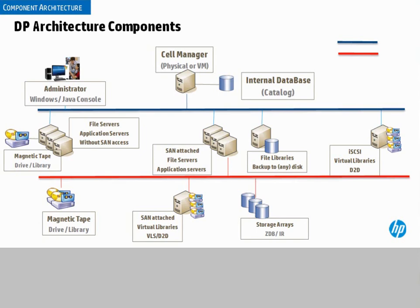Also on the local area network you might have some number of servers, some of which might have locally attached backup repositories — tape or disk drives — and many or most of which probably would not. Somewhere else on the local area network you might have a server that's a backup server, meaning it has attached to it or is responsible for managing some sort of file repository — tape or disk drives typically. In the middle, you can see servers that have their primary storage on storage arrays on a storage area network, depicted in red. On the storage area network you could also have backup devices like tape drives or virtual tape libraries.